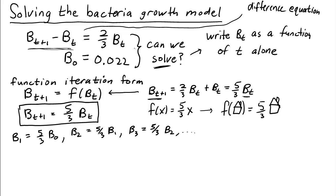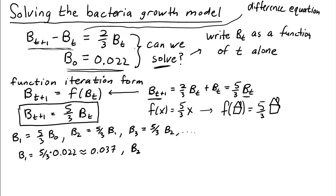Now, given the initial condition b_0 = 0.022, we can calculate that b_1 = five-thirds times 0.022, which is about 0.037. And b_2 = five-thirds times b_1, or five-thirds times 0.037, which is approximately 0.061.